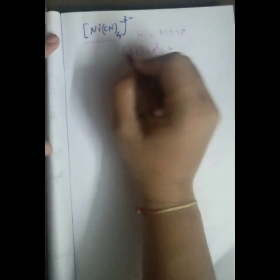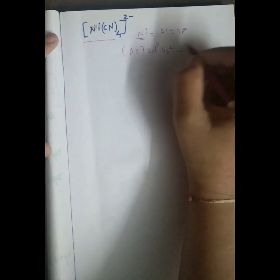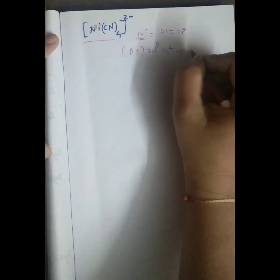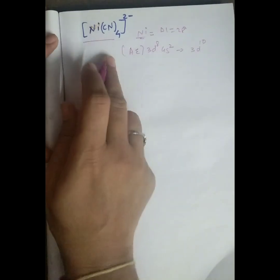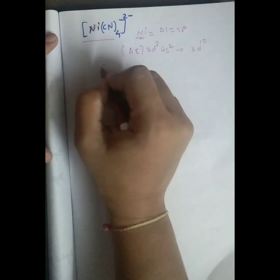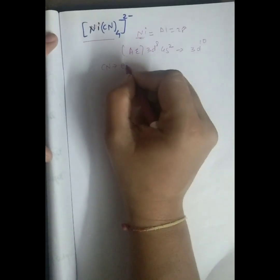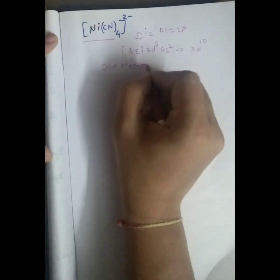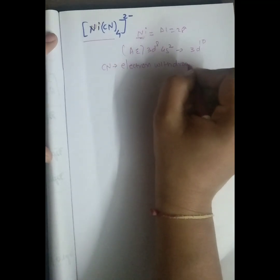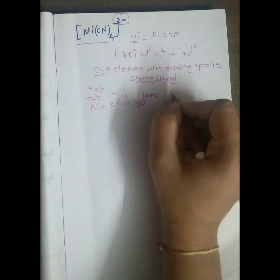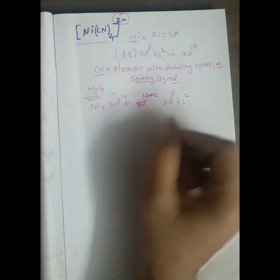So this is the electronic configuration will become 3d¹⁰. Now in this case nickel is a metal, but here cyanide is the electron withdrawing species. The electronic configuration is 3d⁸ and 4s².